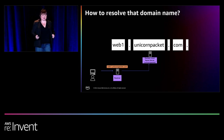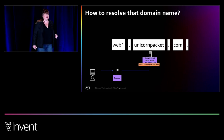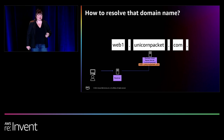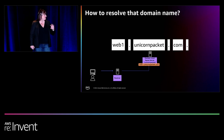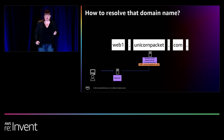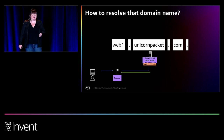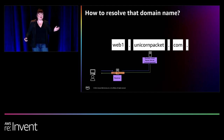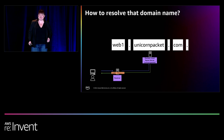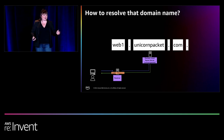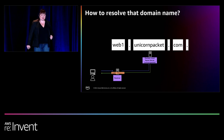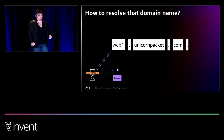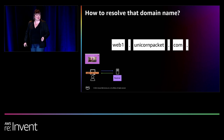Next, the DNS resolver sends a request to the Unicornpacket name server. The Unicornpacket name server is authoritative for unicornpacket.com, so it looks within its own zone file for the record associated with web1.unicornpacket.com, gets the associated IP address value 192.0.2.11, and returns it to the resolver. The resolver caches that information for the time specified in the TTL, so that next time somebody browses to that address it can respond more quickly. Then it returns the IP address to the client, which can go directly to the web server and display the Unicorn Packet website.